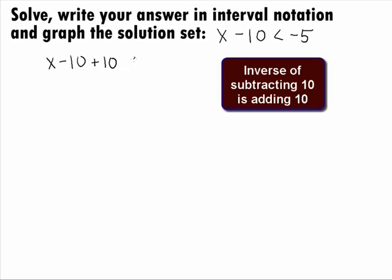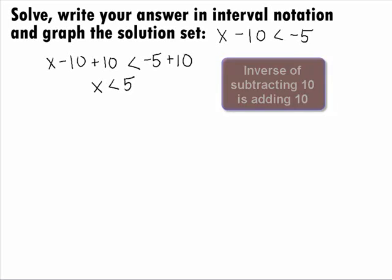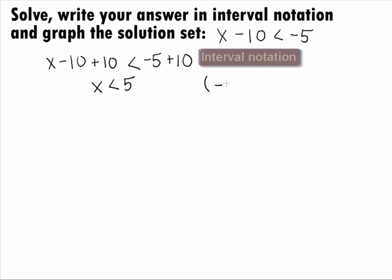We will have the same inequality of less than, negative 5 plus 10, which will simplify to be x is less than 5, which is our final answer to the inequality part of this problem.